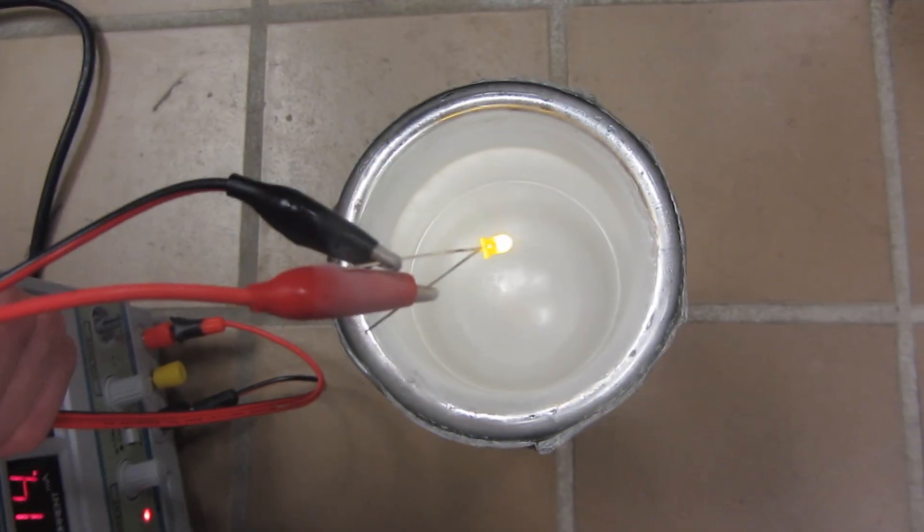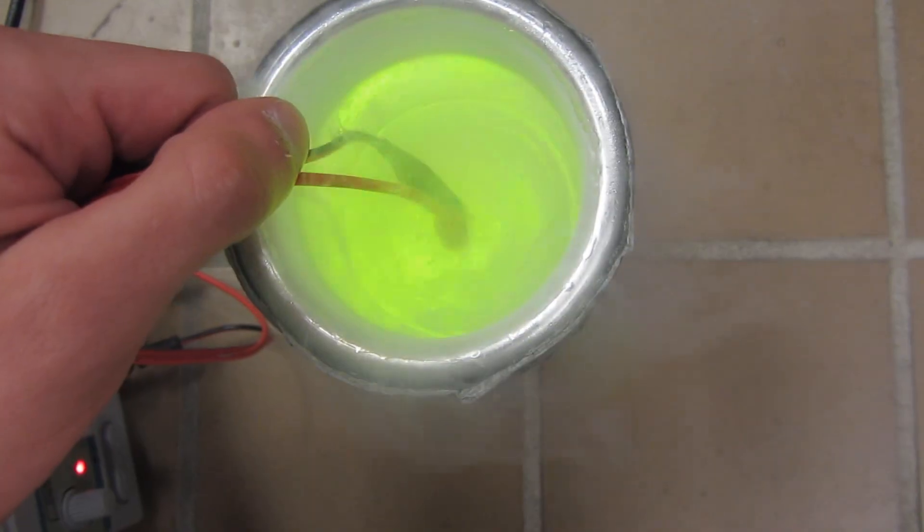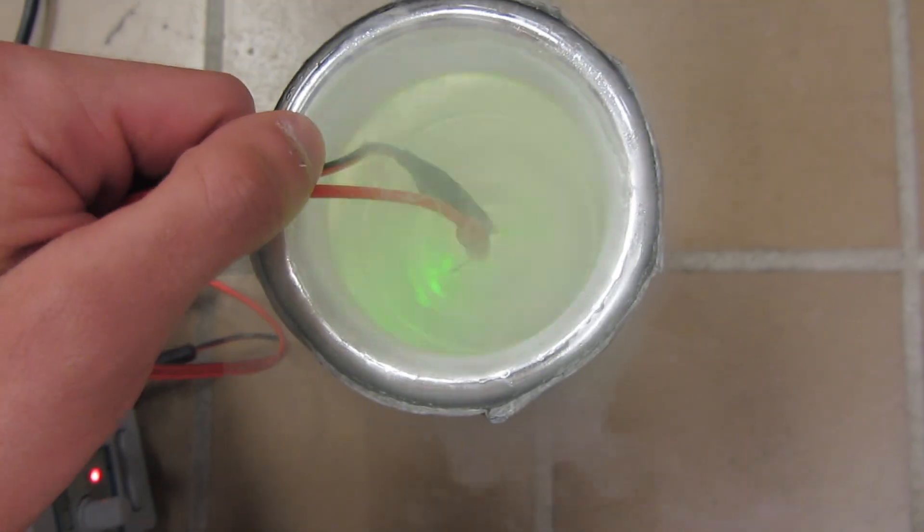Alright, so we've got a yellow LED here. We're going to fine-tune the wavelength by dropping it in liquid nitrogen. Oh yeah, look at that. Bright green there.